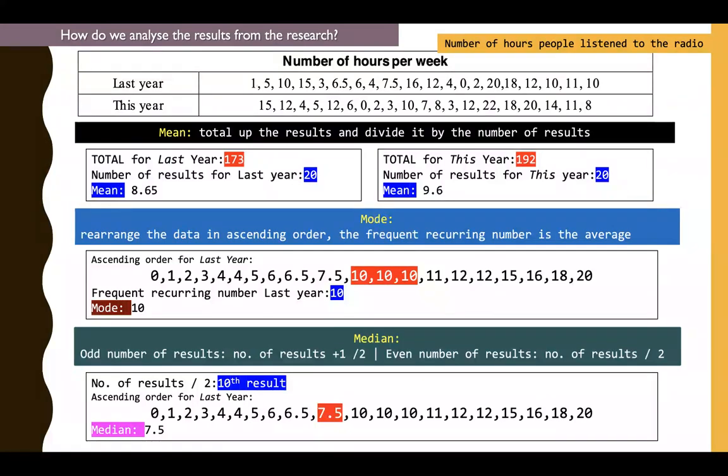If it is, let's say, 19 people, 19 results, then you need to add one to make it even. But otherwise, it is just an even number divided by 2. So 20 people divided by 2 gives you the 10th result. And that corresponds with 7.5 hours. So averages, whether you use mean, mode or median, gives you different results to understand, on average, how many hours do people actually listen to the radio.